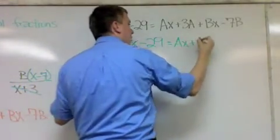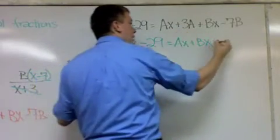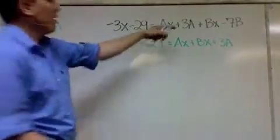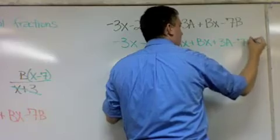So we're going to put things with x's first. ax plus bx plus 3a. I'm going to put the things that just have numbers, no x's second. 3a minus 7b.